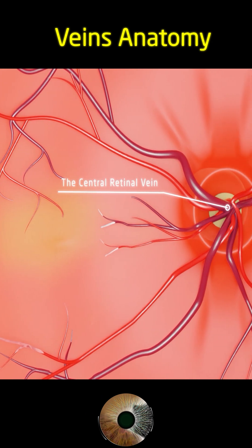The central retinal vein runs alongside the central retinal artery. It begins at the optic disc, formed by the confluence of four retinal venules, which correspond to the arteriolar arcades. It drains the inner layers of the retina, from the nerve fiber layer to the inner nuclear layer.